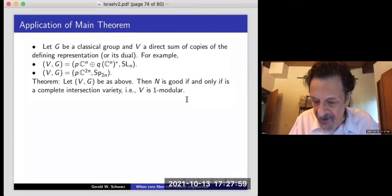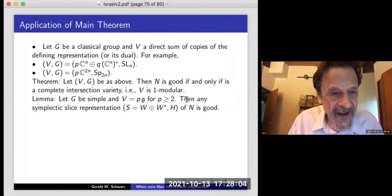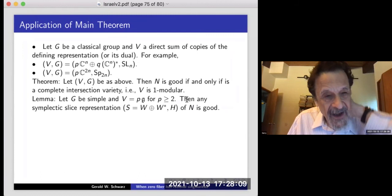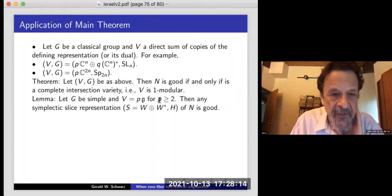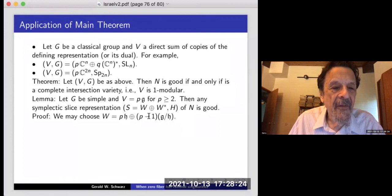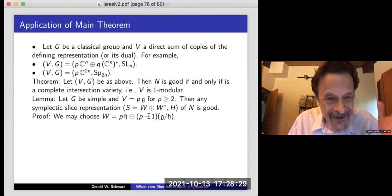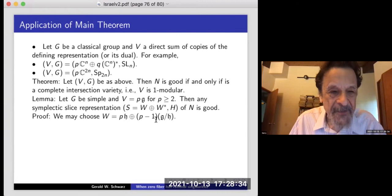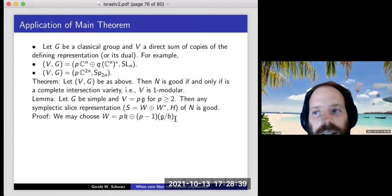Back to the case at hand: let G be simple and V be P copies of the adjoint representation for P ≥ 2. Then the lemma says any symplectic slice representation is good, which is what we need to prove the main theorem. There is an obvious Lagrangian subspace W: P copies of the Lie algebra of H plus (P−1) copies of g/h as an H-module. The Lagrangian subspace is actually the slice in V, and for orthogonal representations, if you take the slice representation corresponding to H in V, then that slice representation plus its dual is the symplectic slice.